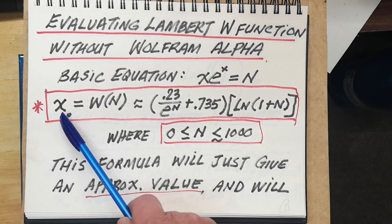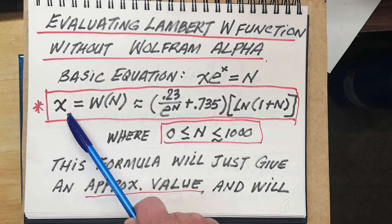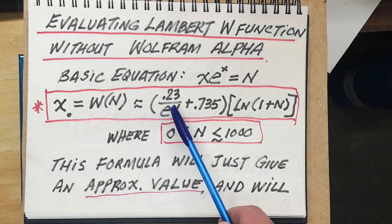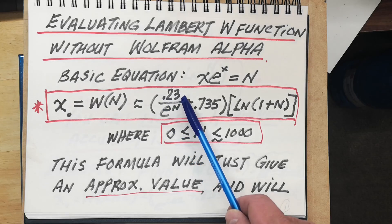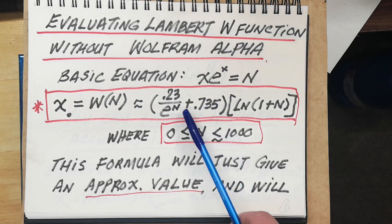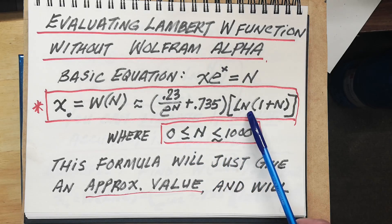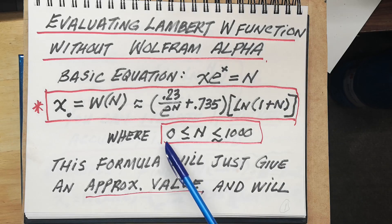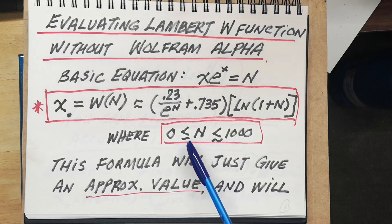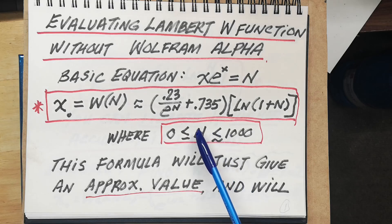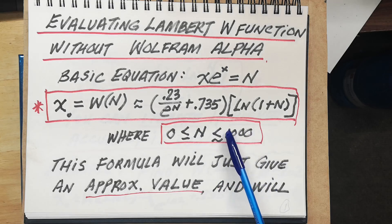An initial approximation x₀, which equals the W function of n, is approximately equal to 0.23 divided by e to the n, plus 0.735, quantity multiplied by ln of (1 + n), where n is greater than 0 and less than about 1,000.